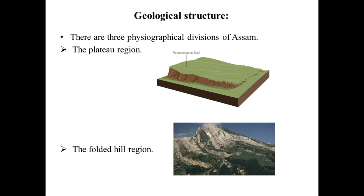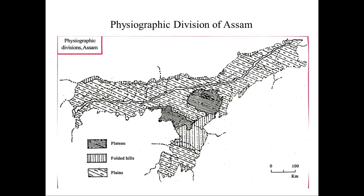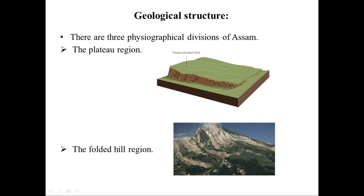Fold hills can be divided into different types based on the formation of their slopes. A symmetrical fold is when, if you divide the slope equally into two halves, one half is equal to the other. An asymmetrical fold is when the two halves are not equal. Here in this picture, the slope is asymmetrical because if you divide it in the middle, the two halves are not equal.